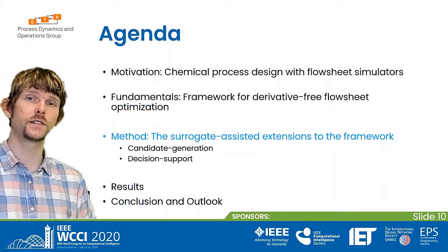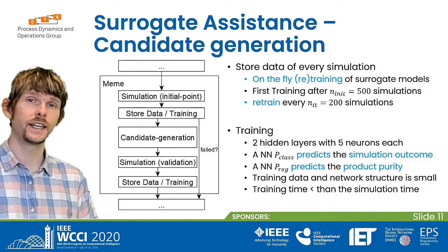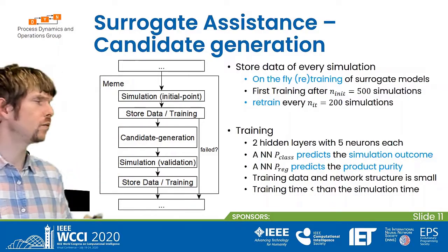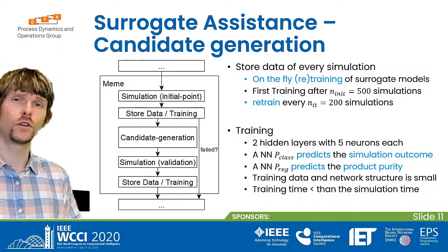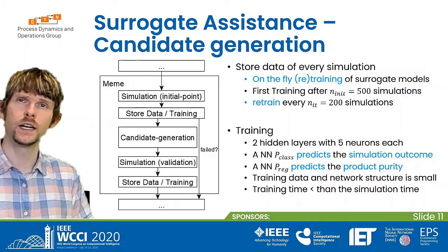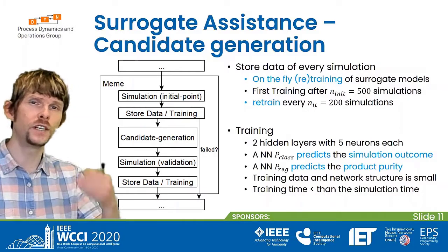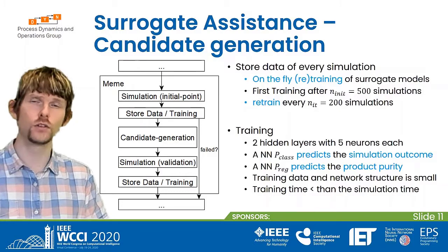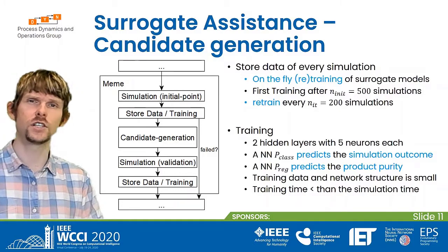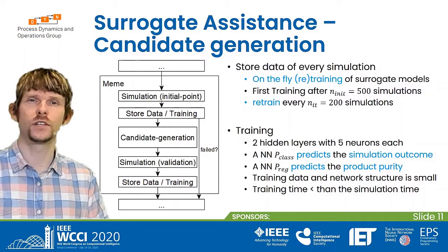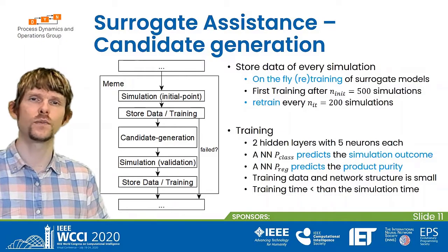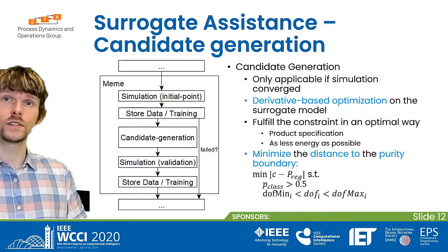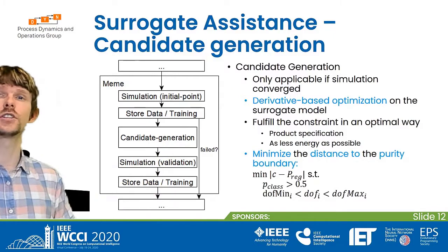Let me show you the extensions to the framework. The candidate generation starts with a simulation of the initial point, then we store data and possibly trigger training, because we want to train neural networks on the fly. The first training occurs after 500 simulations, and we retrain every 200 simulations thereafter. We use small neural networks with two hidden layers and five neurons each — a classifier predicting the simulation outcome and a regressor predicting productivity — with training times shorter than simulation time.